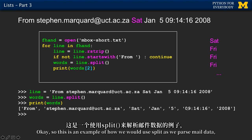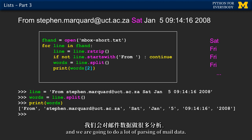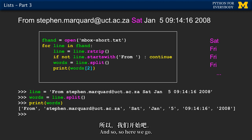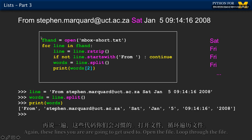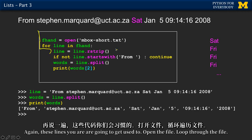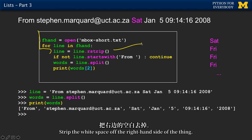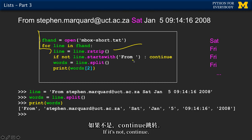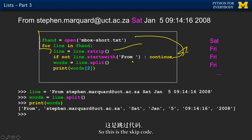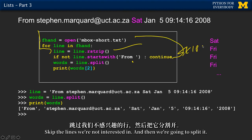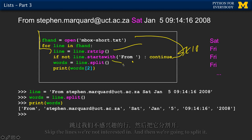Here's an example of how we would use split as we parse mail data, and we're going to do a lot of parsing of mail data. Open the file, loop through the file, strip the white space off the right-hand side. Check to see if it starts with 'from ' - from space. If it's not, continue. This is the skip code - skip lines we're not interested in - and then we're going to split it.